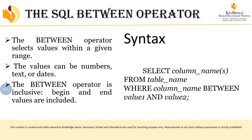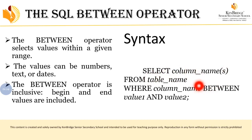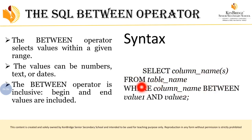Here is the syntax of the BETWEEN operator. The syntax is: SELECT column name or names FROM table name WHERE column name BETWEEN value1 AND value2. You have to write BETWEEN after the WHERE clause. About the WHERE clause we have already seen in our previous videos, so if you haven't watched that video, please go and watch it first.